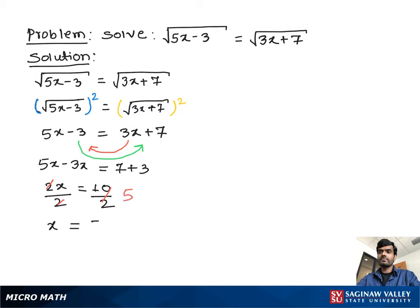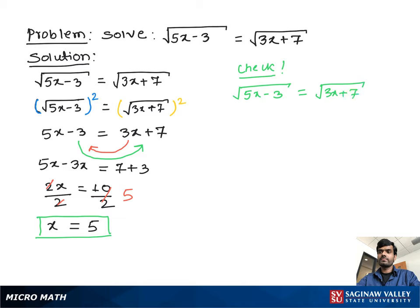Now let's verify that x equals 5 is the solution for the original equation. We write the original equation one more time: square root of (5x minus 3) equals square root of (3x plus 7). Substituting x equals 5: square root of (5 times 5 minus 3) equals square root of (3 times 5 plus 7).